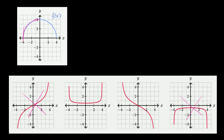Now let's think about what happens when x gets to 0. When x gets to 0, the tangent line is horizontal — we're at a maximum point of this curve. The slope of a horizontal line is 0. So we're looking for which one of these curves hits 0 when x is equal to 0. Well, this one doesn't.